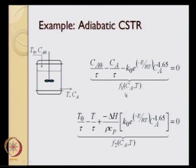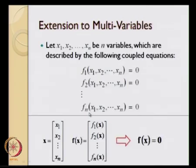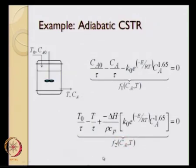Our x bar in this case, if we refer to the previous slide, the f bar in this case becomes f1 and f2, and x bar is just going to be CA and T, and n in this particular example is nothing but 2.